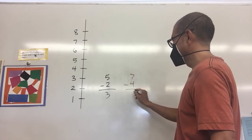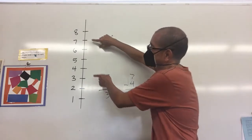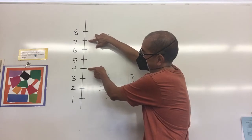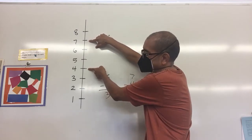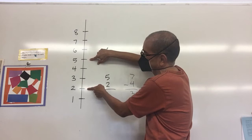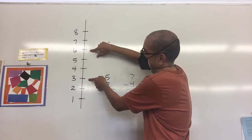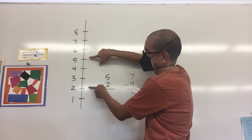And 7 minus 4 is 3, so it has the exact same number of space in between. Well that should be obvious because I moved both numbers the same number of spaces up.